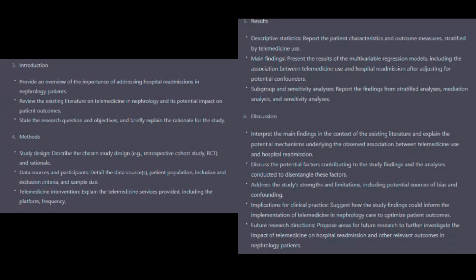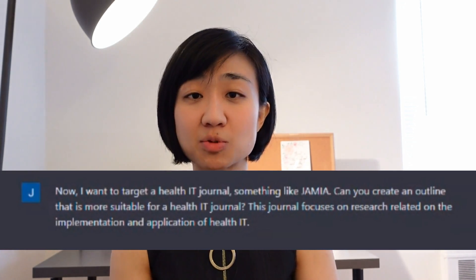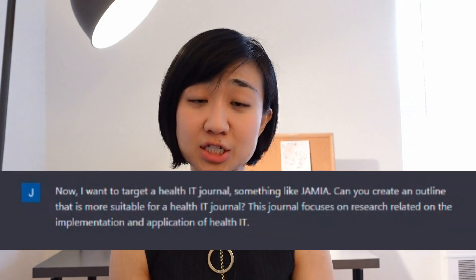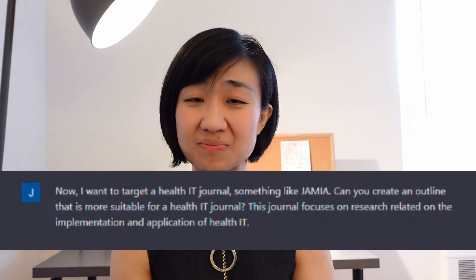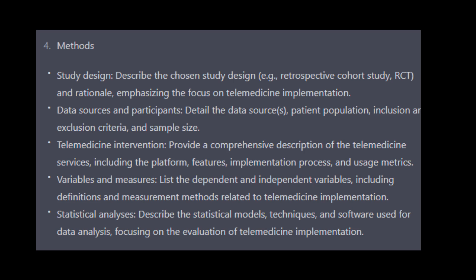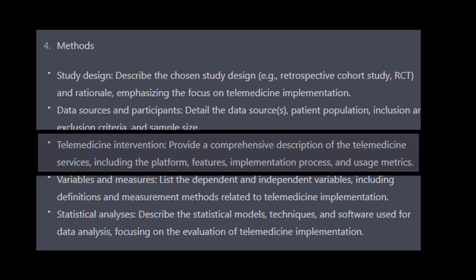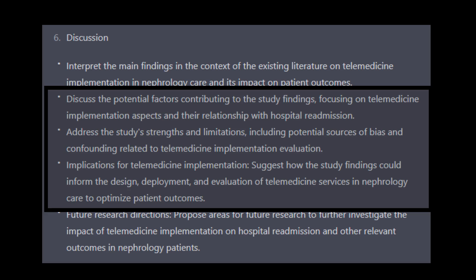What I think is really cool is using it to outline the paper for a different type of journal — outside of my field — to see how the framing differs. I tried: 'I want to target a health IT journal like JAMIA. Can you create an outline more suitable for a health IT journal? This journal focuses on research related to implementation and application of health IT.' What's interesting is how they framed the methods section — focusing more on the telemedicine intervention, describing the services, platform, features, implementation process, and usage metrics. The discussion also focused on implementation aspects and how findings could inform design, deployment, and evaluation of telemedicine. This is a great way to think about which journal to target and how to frame your paper accordingly.